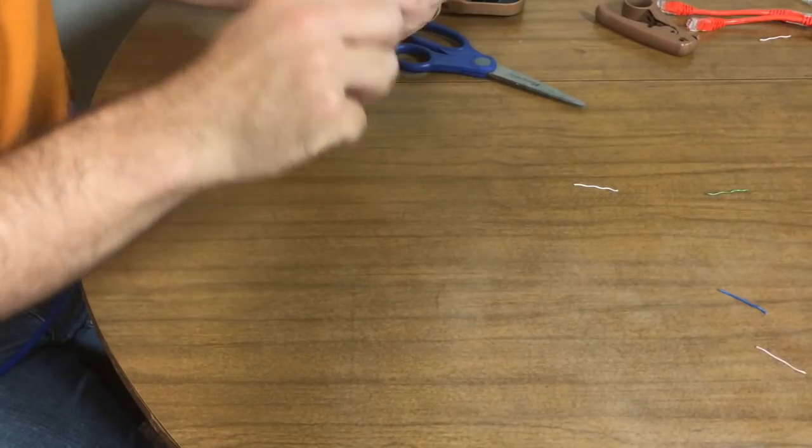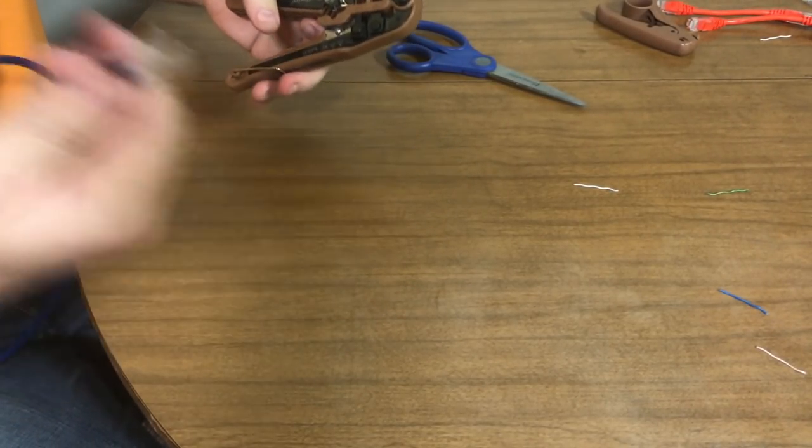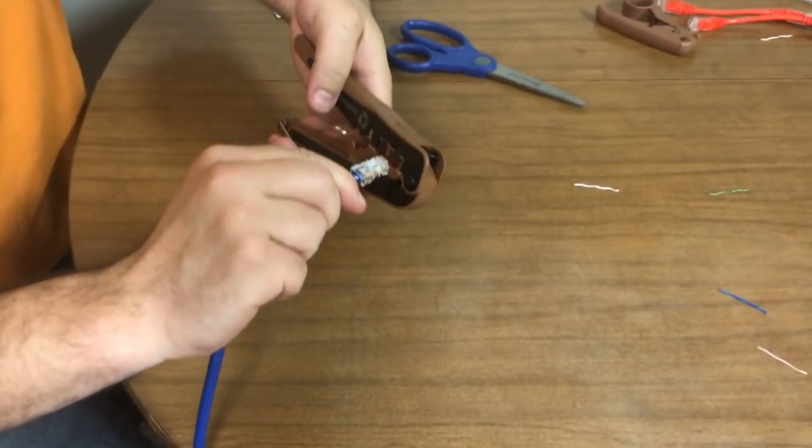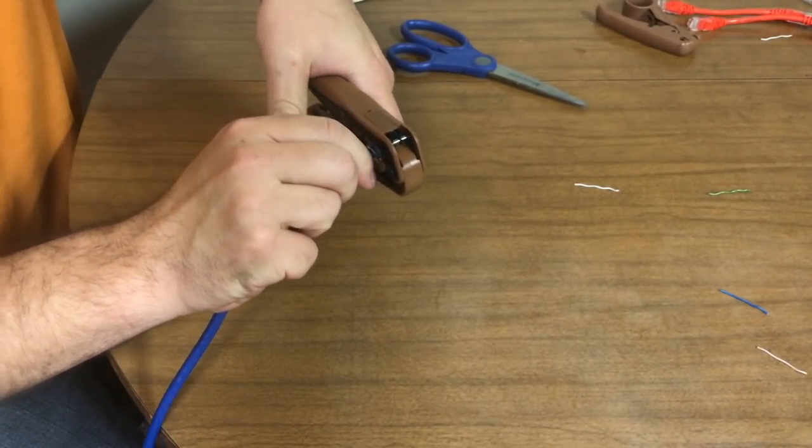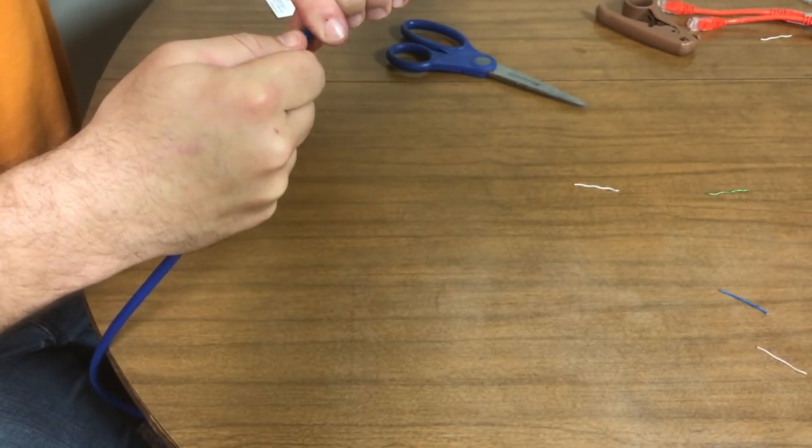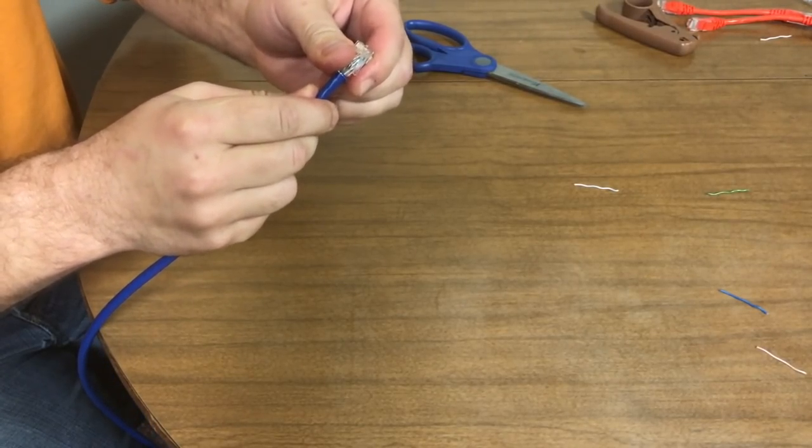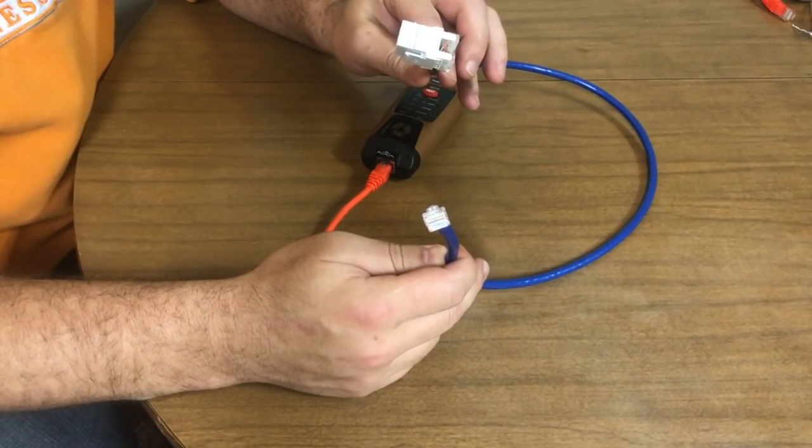So now that we have that end pushed on there, take a crimper, slip it into the crimper, crimp it into place. And then I like to give a little bit of a tug to make sure it's on there. And it's on there firmly. Let's see how we did with the tester.